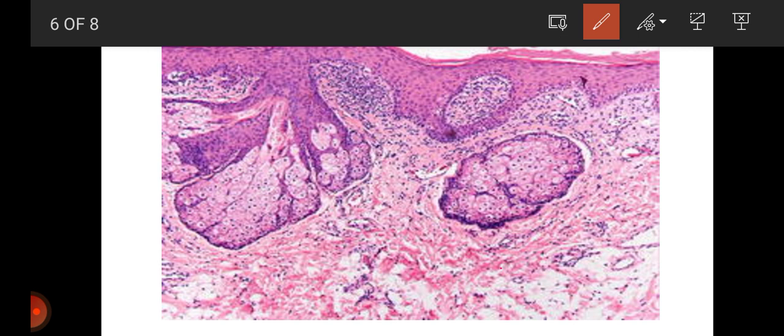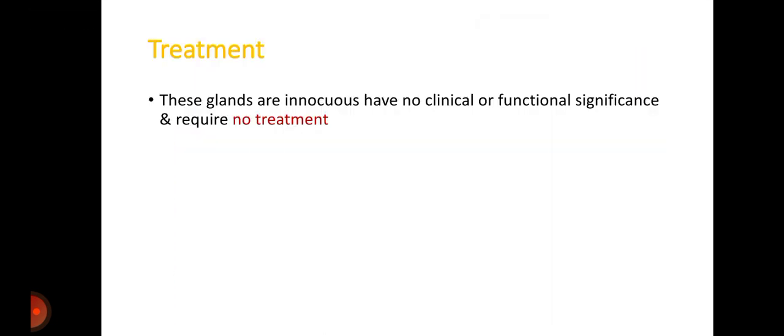Fordyce's granules — that is, ectopic sebaceous glands — are visible here, with acinar lobules beneath the epithelial surface communicating with the surface through a central duct. Regarding treatment: these glands are innocuous, meaning not harmful, and have no clinical significance, so no treatment is required. I hope this video is useful for you — keep watching, stay tuned, thank you.